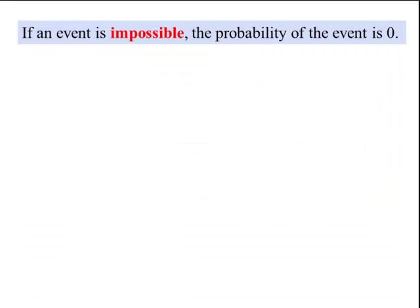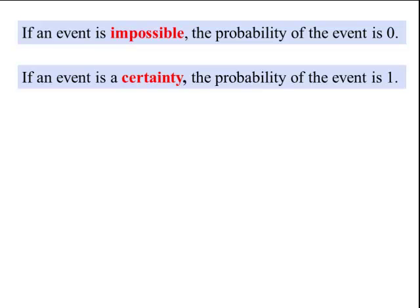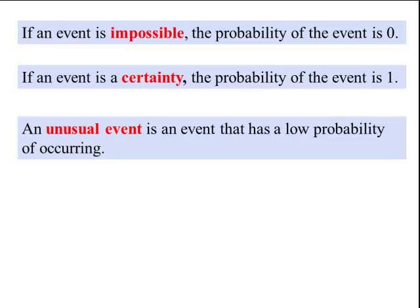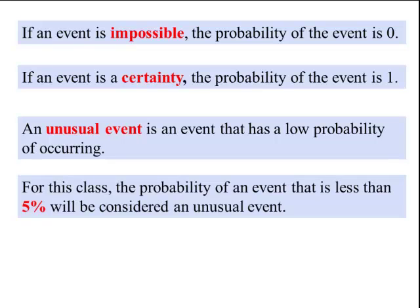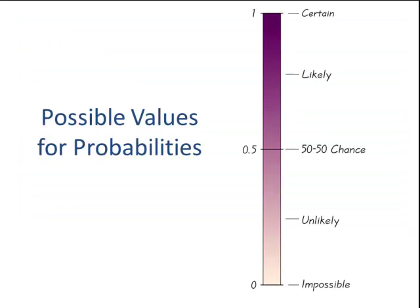If an event is impossible, it has a probability of zero. If an event is certain, the probability is equal to one. And an unusual event is an event that has a low probability of occurring. Now for this class, we are going to define an unusual event as any event that has a probability of less than five percent. So here is a visual. This is the highest. When you have a probability of one, it is certain to happen. And as it gets closer to zero, it becomes less likely to happen. And if you get to zero, the probability of zero means the event is impossible. It cannot happen, and we will have a probability of zero then.